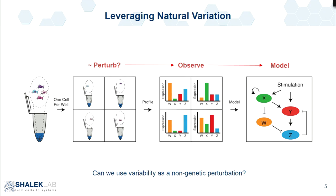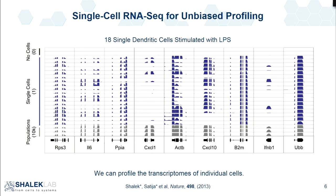This was the first data we ever generated when I was a postdoc. I want to show you what the data actually looks like, because I think in a lot of the plots we lose sight of what we're actually measuring. This is what gene expression looks like in a single cell. Here are 18 single dendritic cells hit with LPS. I'm showing you IGV traces, where these are exons and introns in between. Single cells are very noisy, while populations look very clean and reproducible.